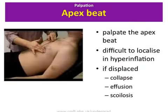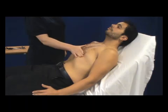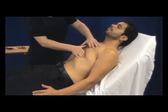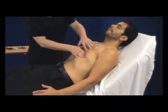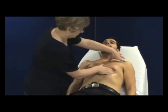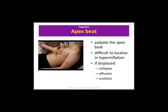To check for mediastinal shift, the apex beat is palpated. If it is displaced, common causes of mediastinal displacement occur due to collapse of the lung, pleural effusion, or scoliosis of the spine.